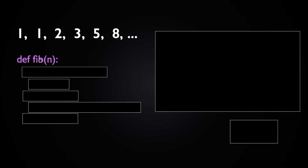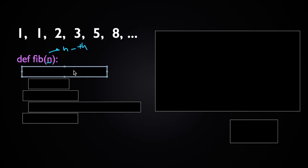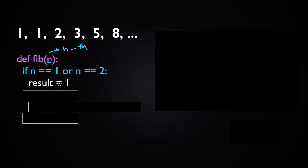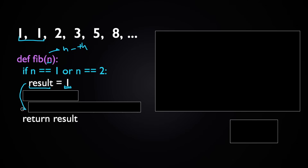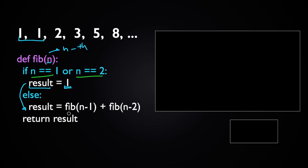Let's first see what a recursive solution might look like for this problem. We're going to write a function called fib(n) which takes n, a positive integer, and returns the nth Fibonacci number. If n is equal to 1 or 2, we know the first and second Fibonacci numbers are 1, so we store 1 in a temporary variable called result and return that. If n is neither 1 nor 2, we return the sum of fib(n-1) plus fib(n-2), store that in result, and return it.